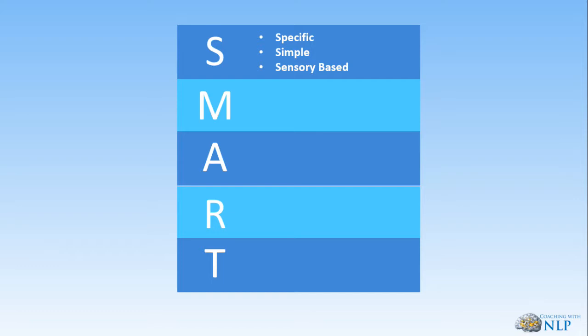Next, M stands for Measurable and Meaningful to you. If I say I've made one million pounds profit, how am I going to know that? I need to be able to measure it. I could say 'I can see that on my profit and loss statement' or 'I can see it in the letter from my accountant.' There needs to be some way to measure the outcome.